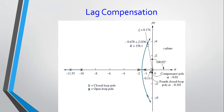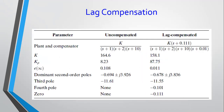You can find your new operating point, which can be used to work out peak time and settling time to compare with earlier results. This table summarizes what we've done: with the uncompensated system, gain was 164.6; now it's 158.1. The dominant poles were at minus 0.694; now they're at minus 0.678. The imaginary part was 3.926; now it's 3.826. So the settling time and peak time should be more or less the same. The third pole is quite far to the left, which makes our second-order approximation more accurate.